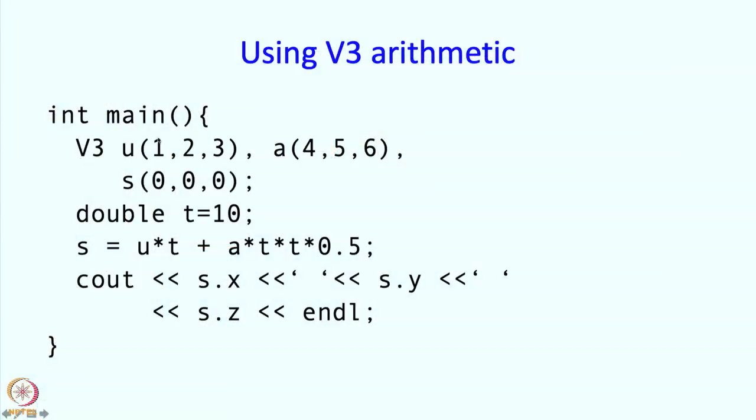Now using this v3 arithmetic, we can do something which looks quite nice. So suppose we have v3 objects u, a and s, remember our ut plus half a t squared example. And let us say t is a double value. Now our formula was ut plus half a t squared. So we have essentially written that formula. But you can see that that formula is going to do what we want.